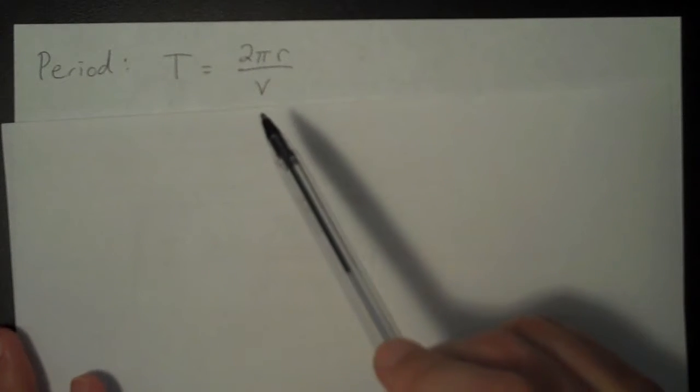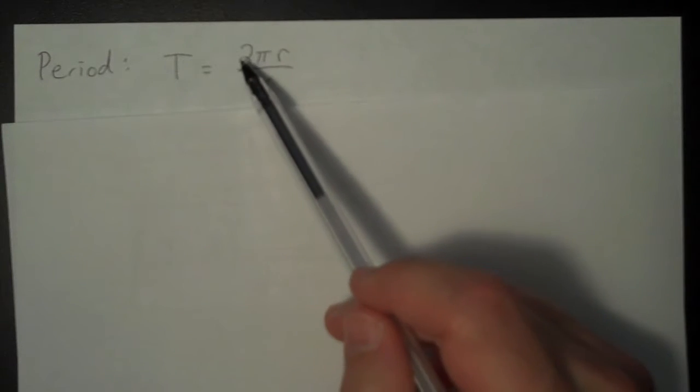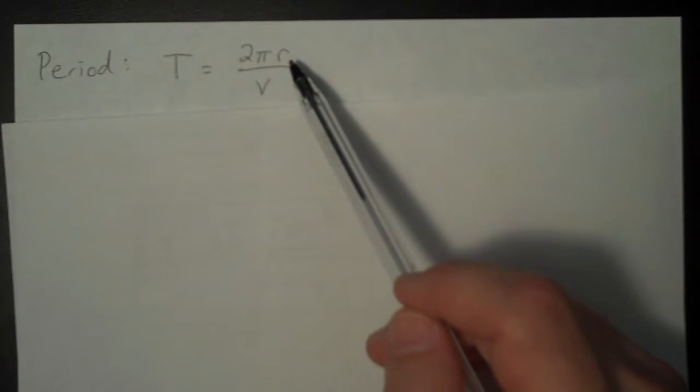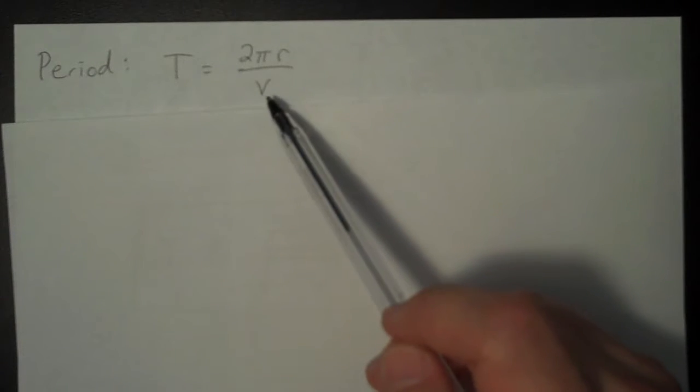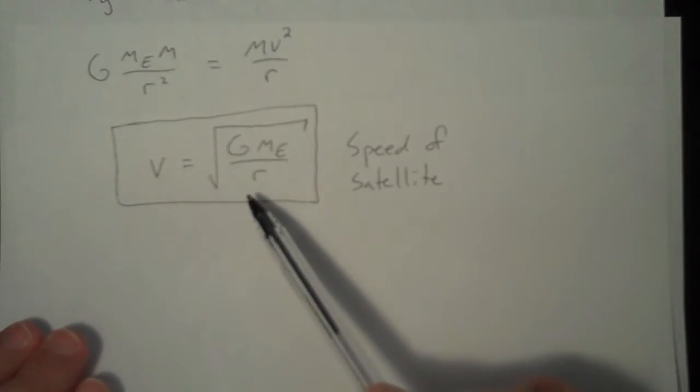And so we want to know what is the distance traveled when you make one rotation, one orbit. That's two pi times the radius. Of course, that's the circumference of a circle divided by that speed that we just found. And that speed we just found was here.